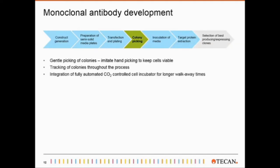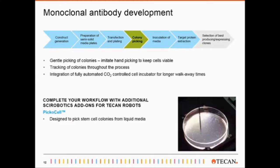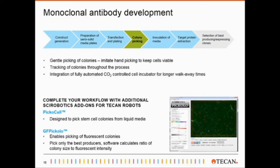An optional integration of a CO2-controlled incubator helps to increase walk-away times. As a side note, SciRobotics offers a whole variety of add-ons for TECAN robots. For example, the Piccolo is designed especially to pick very small colonies in liquid media, like stem cells. Or the GF Piccolo is a device quite similar to the Piccolo, but it is able to detect and pick fluorescent colonies. The software not only detects the fluorescent intensity, but also calculates the ratio of colony size to fluorescent intensity in order to really pick the best producers.